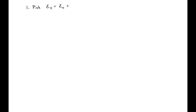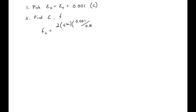Now we're ready to work through the problem. Following our general procedure, we pick a strain for both the steel and concrete — they will be equal due to compatibility. We'll start with a compressive strain of 0.001. To find the stress in the concrete, we plug our values into the Todeschini expression: 2 times 4 KSI times (0.001 / 0.0019), divided by 1 plus (0.001 / 0.0019) squared, giving a concrete stress of 3.3 KSI.